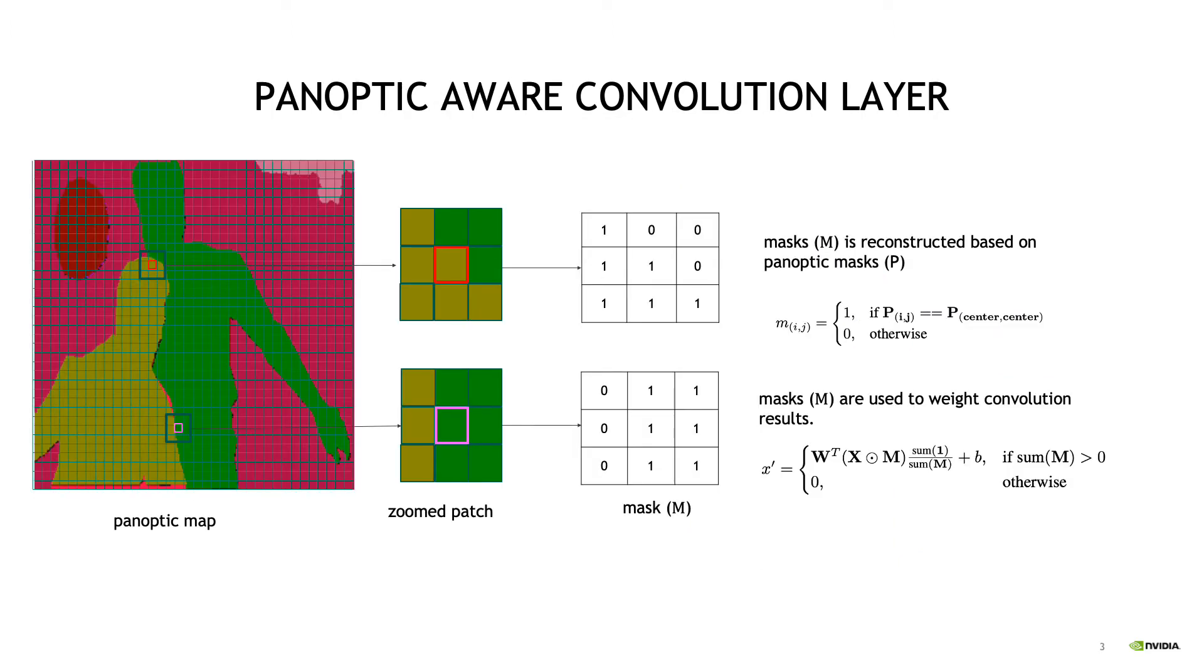We evaluate convolutions based on panoptic maps. This way, convolution results of an instance depend only on the feature values that belong to the same instance.